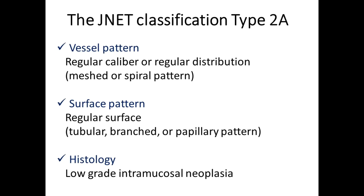The basic characteristics of Type 2A are regular vessel patterns and regular surface patterns. The regularity of the vessel is judged by focusing on the thickness and distribution of the vessels. Typical regular vessels can be described as well-ordered, reticular, spiral, or punctate in form. Type 2A refers to low-grade intramucosal neoplasia.